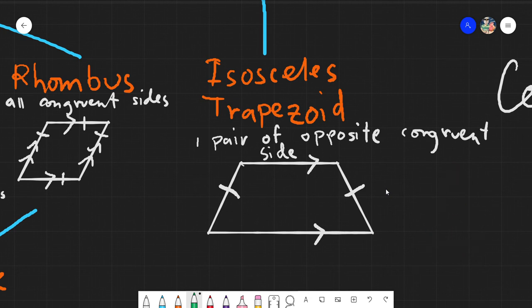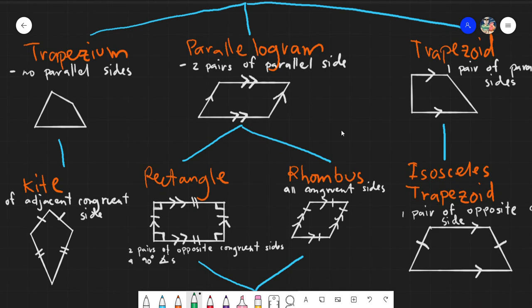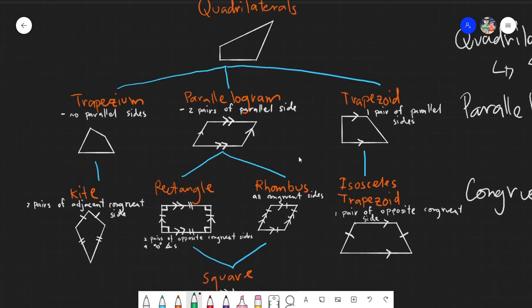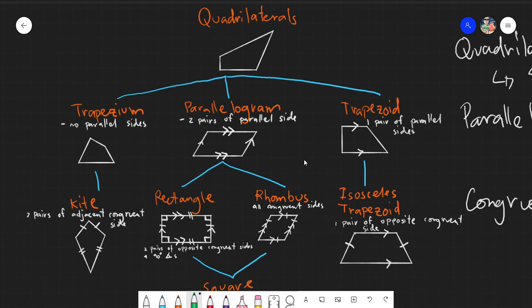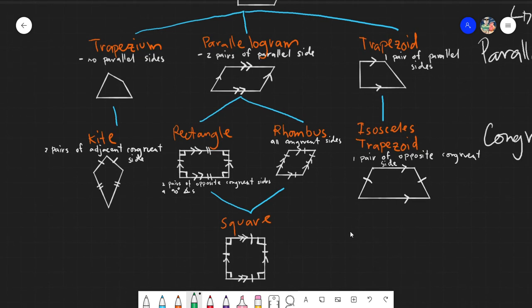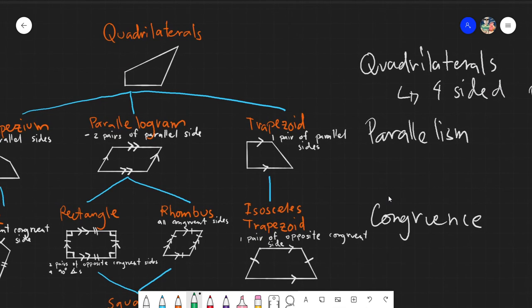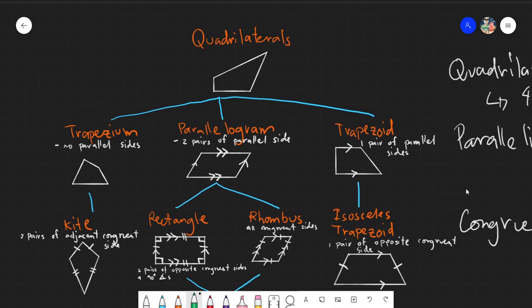So that would be the different kinds of quadrilaterals based on parallelism and also congruence. There are specific, take note, there are specific properties for each kind of quadrilateral. But we will discuss that on a separate instance because a trapezoid, a parallelogram rectangle, rhombus, square, kite, and isosceles trapezoid will have their own property. Though some may be similar, pero may special properties po tayo dyan. And we have proof also for those things.